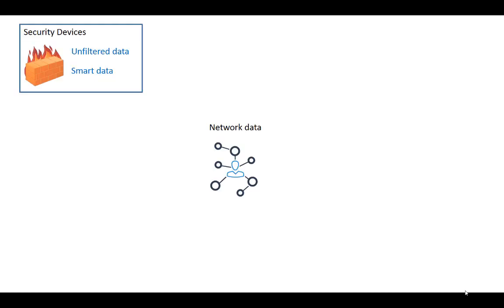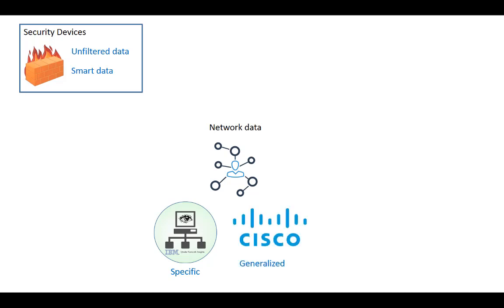I then looked at network devices. You have a whole bunch of specific information-gathering security devices that collect network data. I've listed here QRadar Network Insights, which grabs all this layer seven data and forensics off the wire. But then you have so much general network data from your routing and switching infrastructure, from AWS and from Azure. So I have specific data and very generalized data, and in the same way I combine unfiltered and smart data, I have to take the specific and the generalized and add them to the intelligence model.